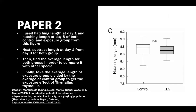In paper 2, I did essentially the same thing, but I used the hatching length at day 1 and hatching length at day 8 for both the control and exposure groups. I subtracted the length at day 1 from day 8 for both groups to find the average length, then divided the average length of the exposure group by the average of the control group to get the exposure effect for Thymallus thymallus. With both values obtained, I could then compare them and arrive at the final results of my study.